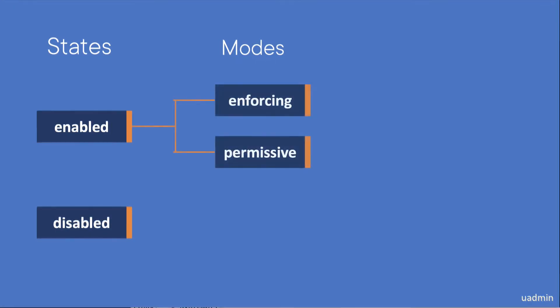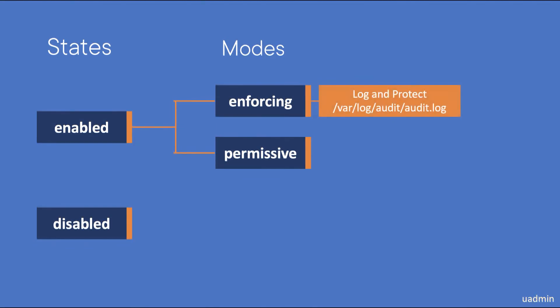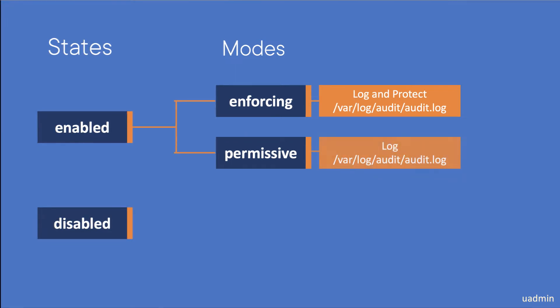When SELinux is enabled it can be in one of two modes: enforcing or permissive. When it's enforcing it will be actively allowing or denying access to the objects that it protects, and all its actions will be logged to /var/log/audit/audit.log. When it's in permissive mode it will still log to the audit log, but it will not block any actions.